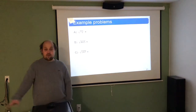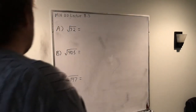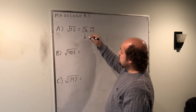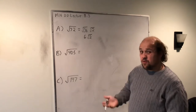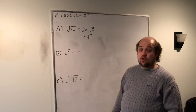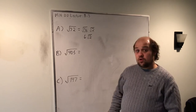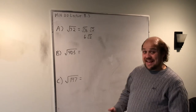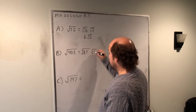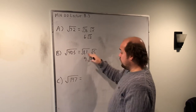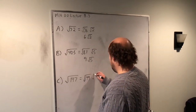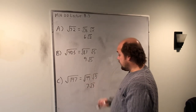For root of 72, I break it down into root of 36 times root of 2. Root of 36 is 6, so the answer is 6 root 2. For root of 405, I try 405 divided by 100 — it doesn't go in evenly — then 405 divided by 81, which does. 81 times 5 gives 405, so I break it into root of 81 times root of 5. Root of 81 is 9, giving 9 root 5. For root of 147, that's root of 49 times root of 3. Root of 49 is 7, so the final answer is 7 root 3.